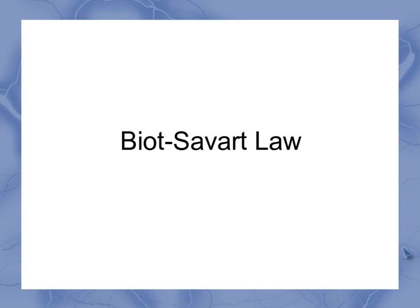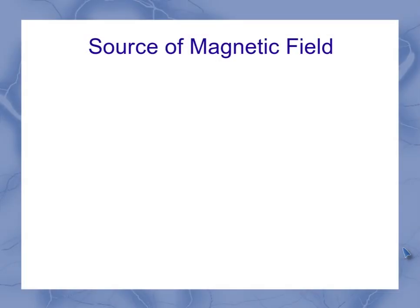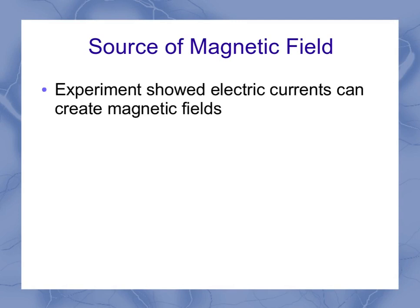Now we look at the Biot-Savart law. Biot and Savart were two scientists who were looking at the source of the magnetic field. And experiments showed that electric currents can create magnetic fields.